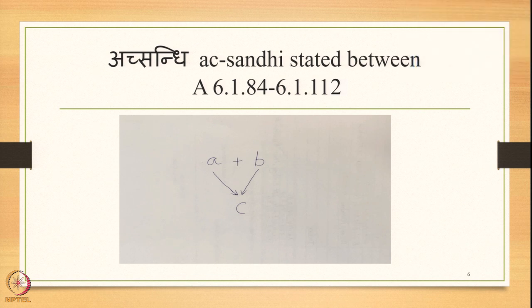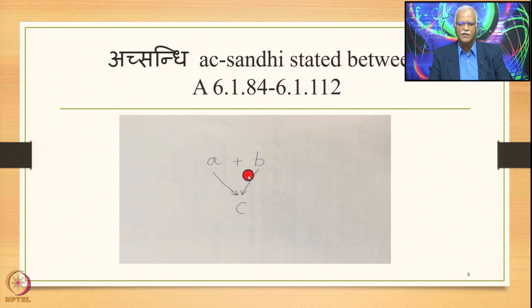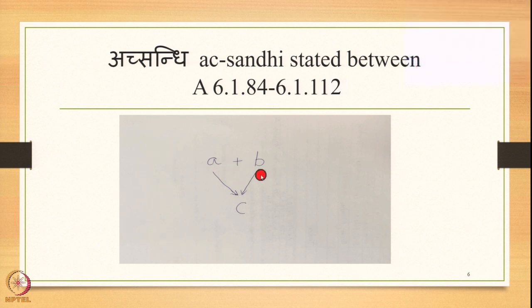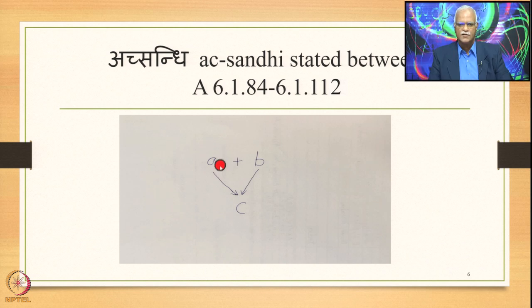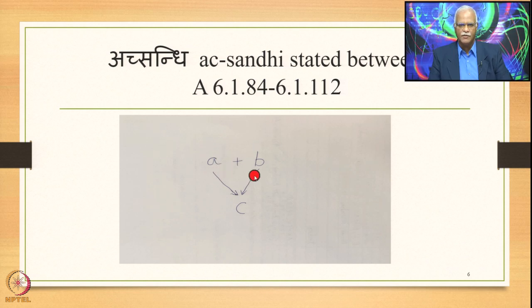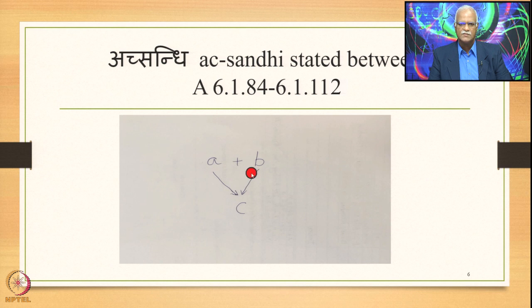Diagrammatically, this can be shown where you have A followed by B in close proximity in the Samhita mode, with A coming immediately before B. One of the rules in section 6.1.84 up to 6.1.112 applies and then in place of both A and B, C comes as a substitute. A and B are the sthanis, C is the adesha. A plus B is the input and C is the output generated by the sutra.